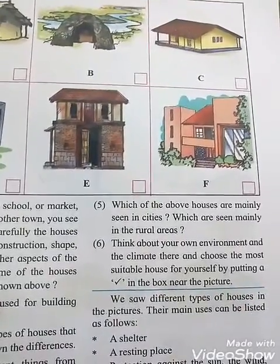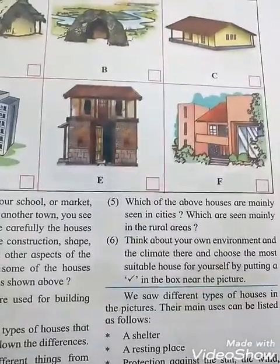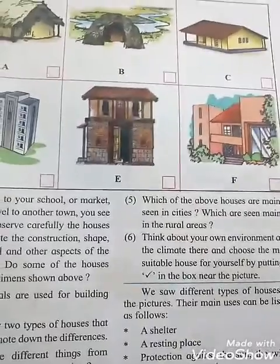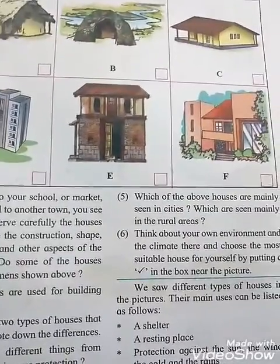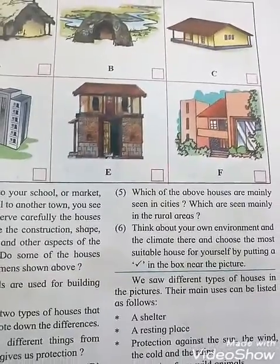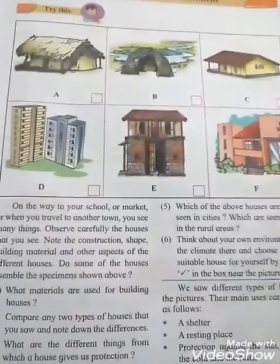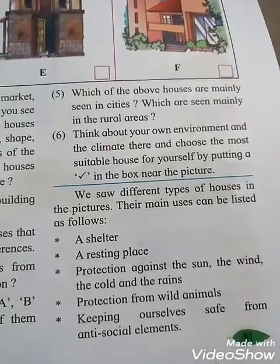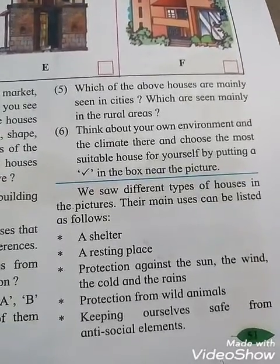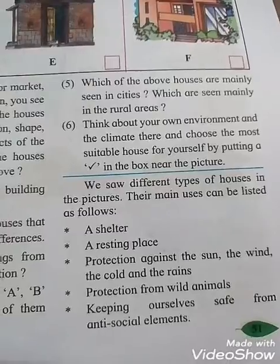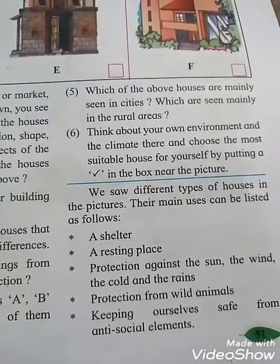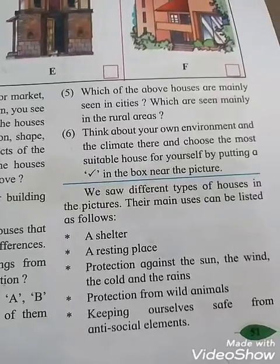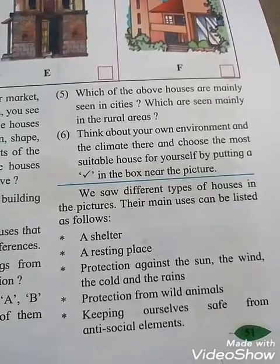Think about your own environment and the climate there, and choose the most suitable house for yourself, putting a right tick mark in the box near the picture. Different types of houses and their main uses can be listed as follows. First point is shelter. Second one is a resting place. Third point is protection against the sun, the wind, the cold, and the rain.